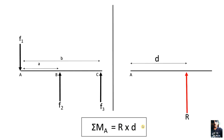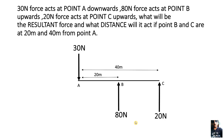Now I will give a numerical to understand Varignon's theorem better. A 30N force is acting at point A in the downward direction. What will be the resultant force and at what distance will it act, if point B and C are at 20m and 40m from point A? So point B is at a distance of 20m from point A, and point C is at a distance of 40m from point A.